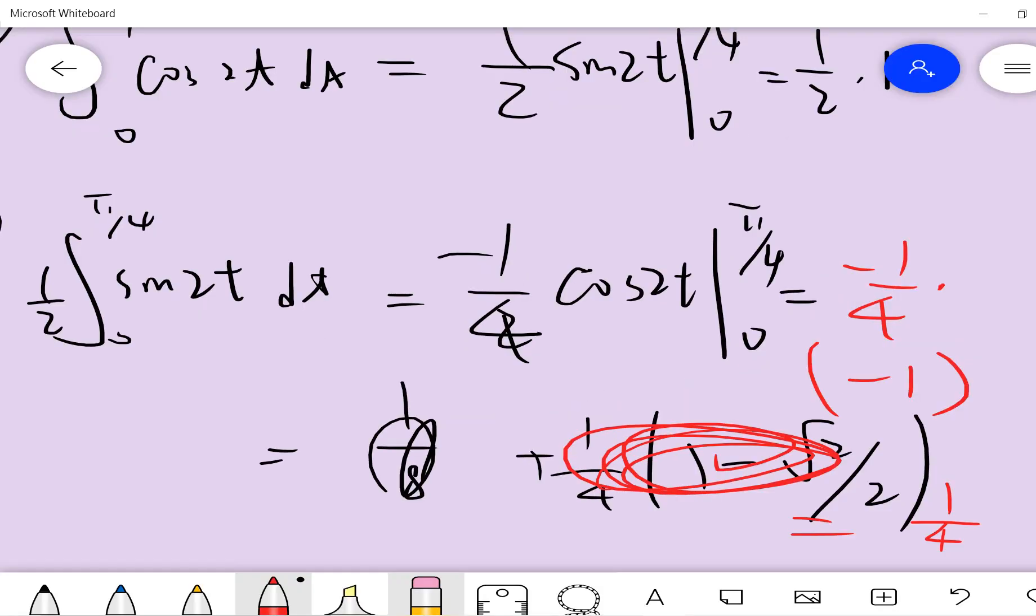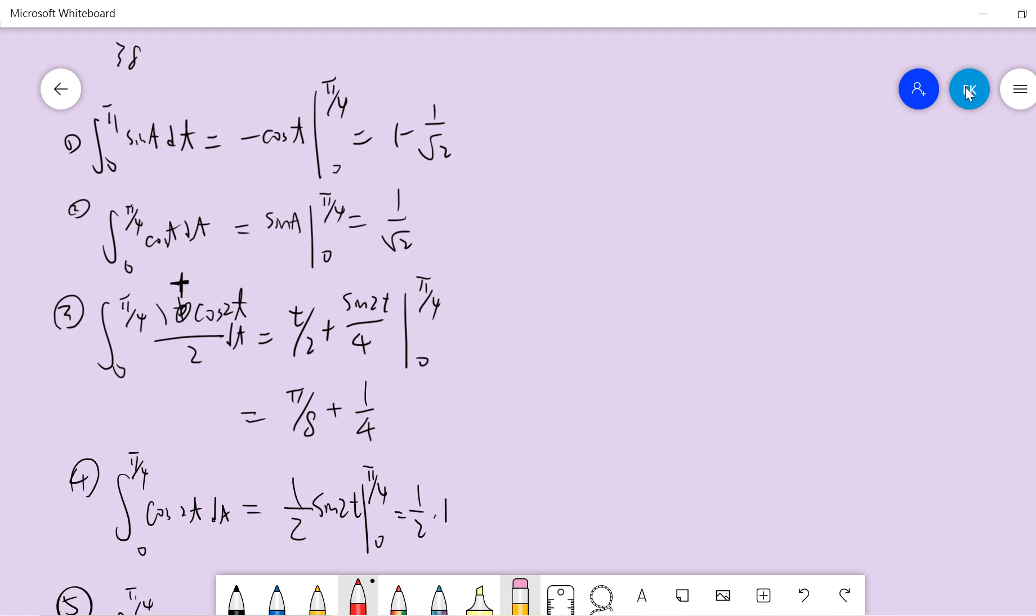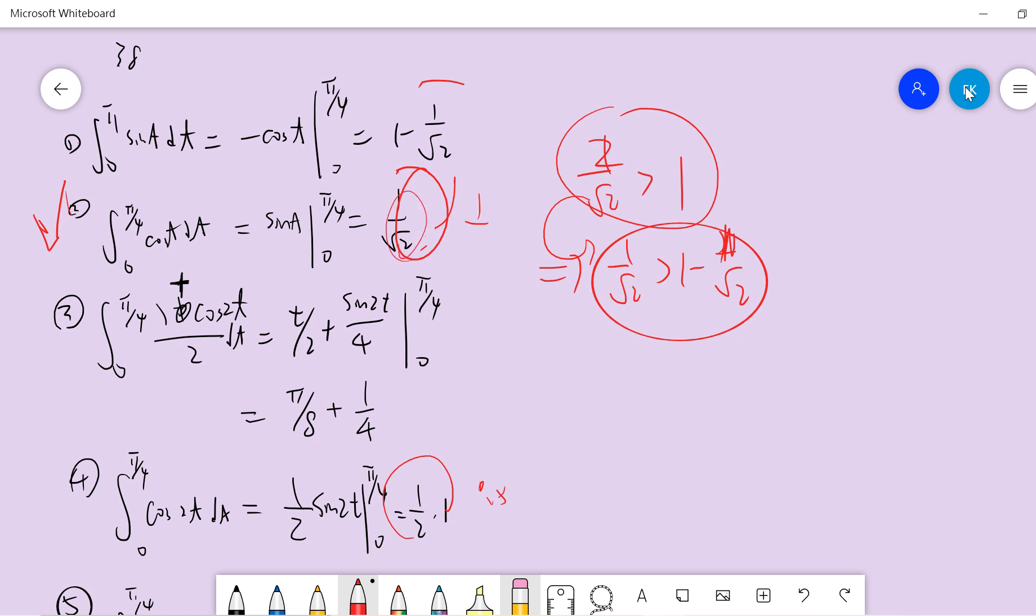We already computed five answers, so which one is the largest? It's hard to determine. Can we first determine these two which one is larger? This one is larger because it's larger than one. So the second one is larger than the first one. This is 0.5 and at least one minus one over 1.4 or something, so the second one is larger than the fourth one.